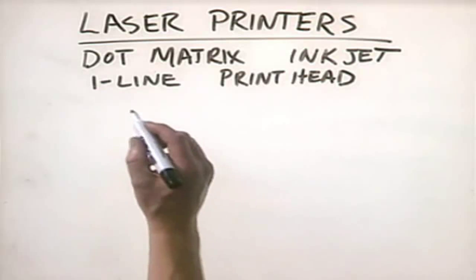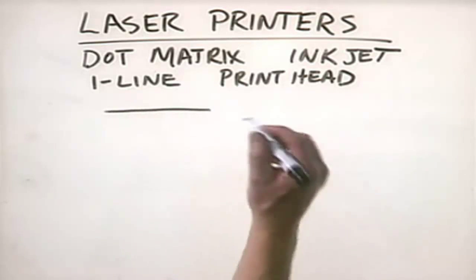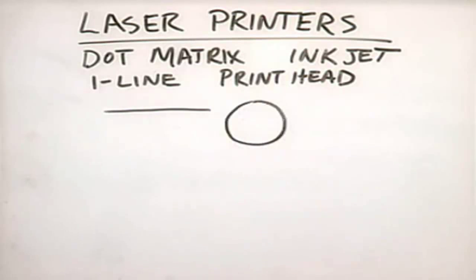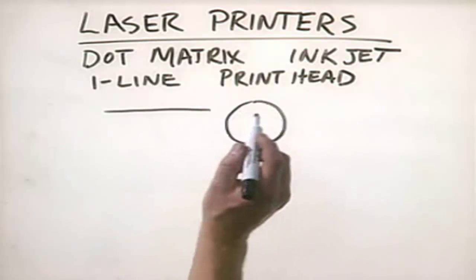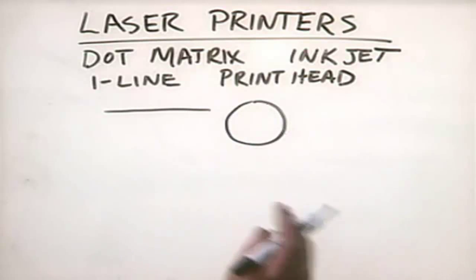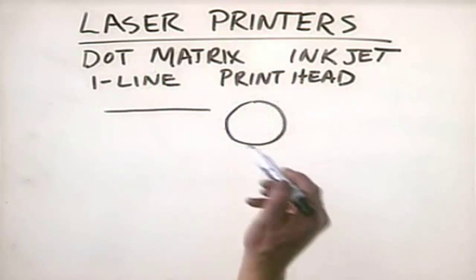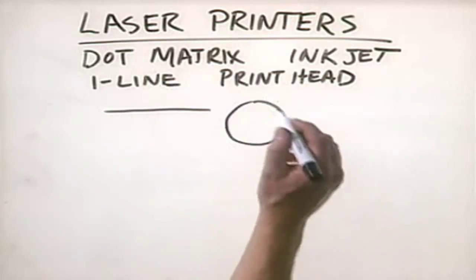Instead, what we do is we use a laser beam to transfer an image to a photo sensitive drum. By doing this we can use the laser going back and forth across this drum as it turns to create a mirror image of the document we want to print on this drum.